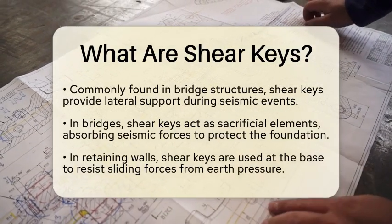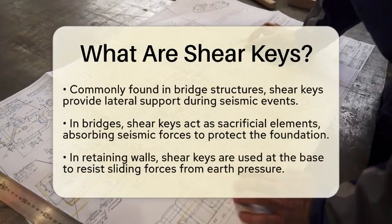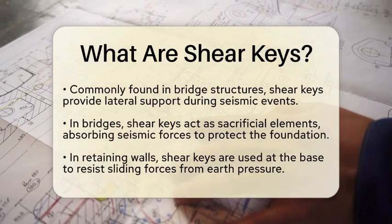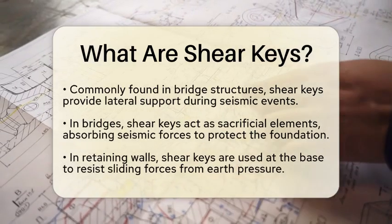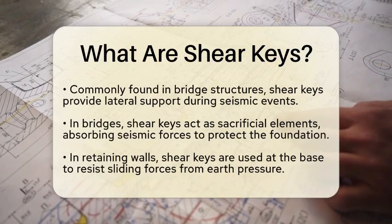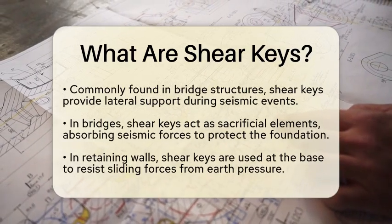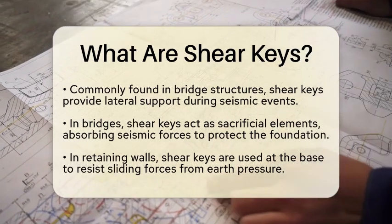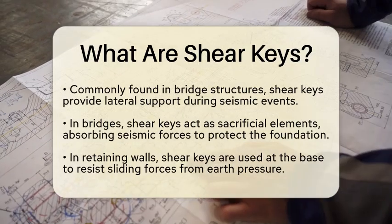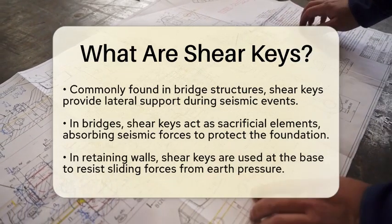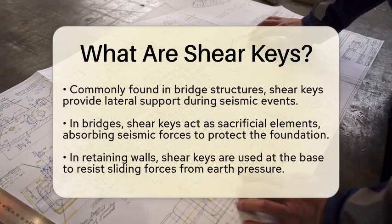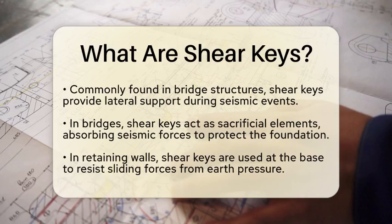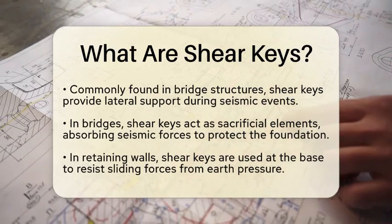You can find shear keys in many types of structures. For example, in bridge structures, shear keys are often placed in the abutments. They provide lateral support to the superstructure, especially during seismic events. These keys act as sacrificial elements, absorbing seismic forces and protecting the bridge's foundation.